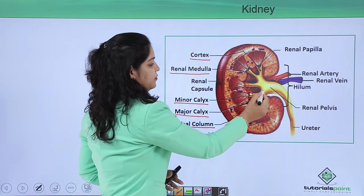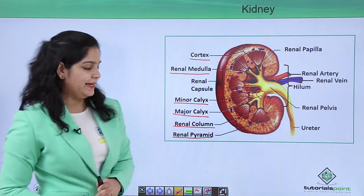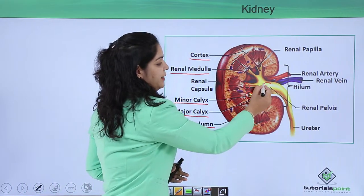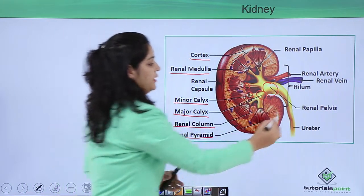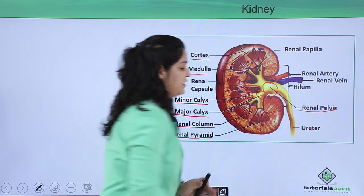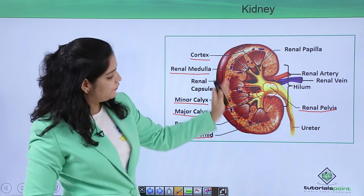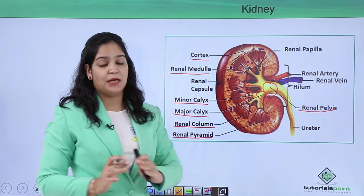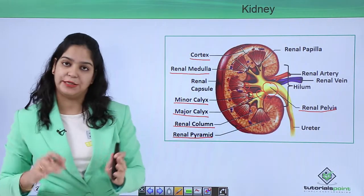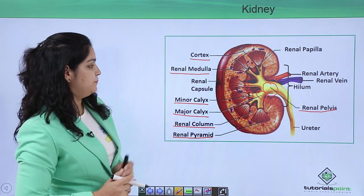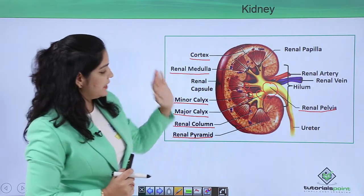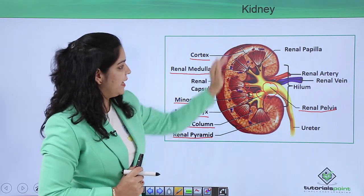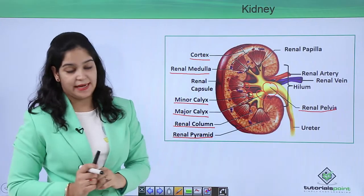The minor calyx further goes to the major calyx, which terminates into the renal pelvis. The renal pelvis further goes to the ureter. The ureter is the part which connects the kidney to the urinary bladder. The convex side and the concave side of the kidney are also visible.